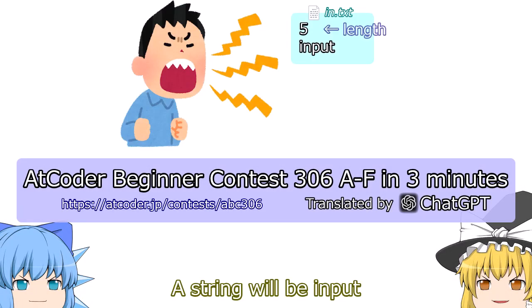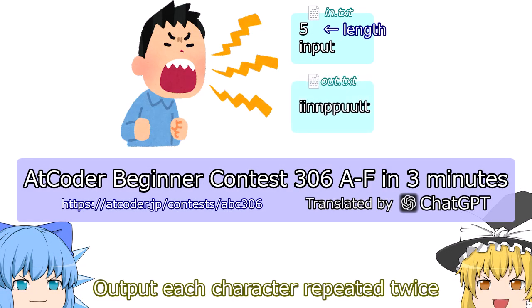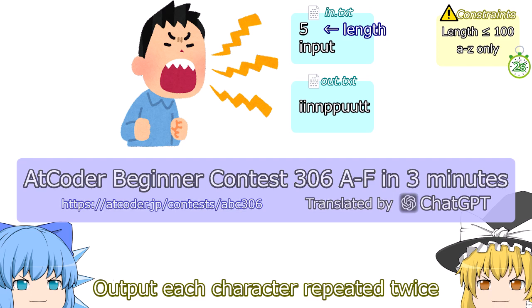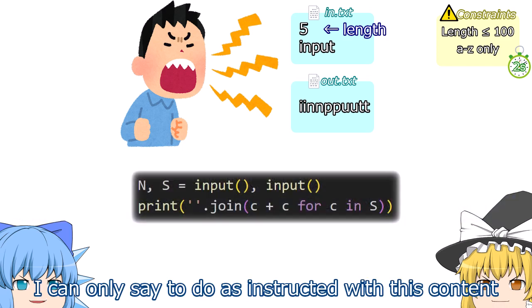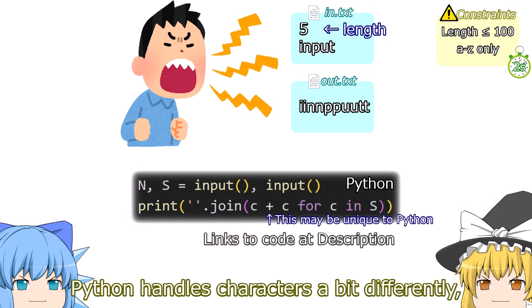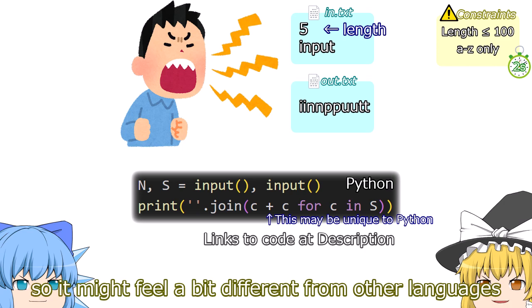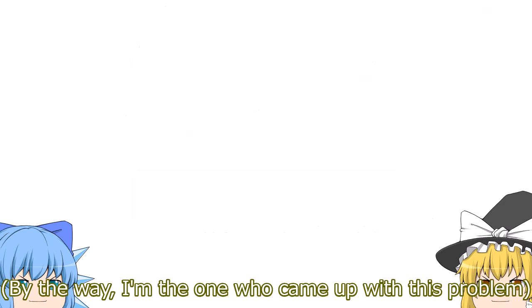Problem A: a string will be input; output each character repeated twice. I can only say to do as instructed. Python handles characters a bit differently, so it might feel a bit different from other languages.